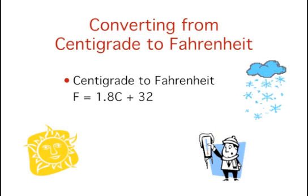For the conversion from centigrade to Fahrenheit, the first constant, or the number you multiply by, is 1.8, and the second constant, or the number you add, is 32. So to convert from centigrade to Fahrenheit, you multiply degrees centigrade by 1.8 and then you add 32.